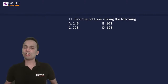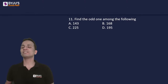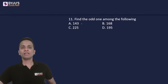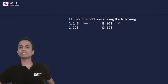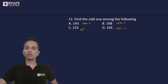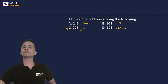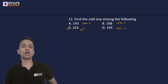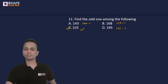The next odd one out question: 143 is a perfect square minus 1 (12²−1=143); 168 is 169−1 (13²−1); 195 is 196−1 (14²−1). But 225 is a perfect square itself (15²=225), not a perfect square minus 1. Therefore 225 is the odd one out.